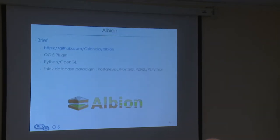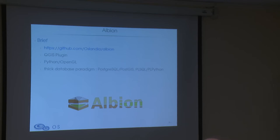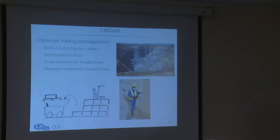To sum up, Albion is open source software developed since 2016. It is a QGIS plugin developed in Python and OpenGL — OpenGL for the 3D part. It reuses what we call a GIS database paradigm: all data including radiometry values and lithology types are stored in a PostgreSQL/PostGIS database. The meaningful code responsible for generating the 3D volume is also stored in the database, written in PL/SQL and PLPython.